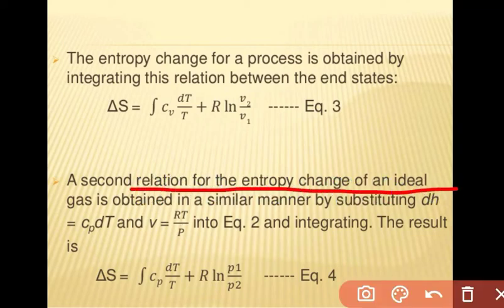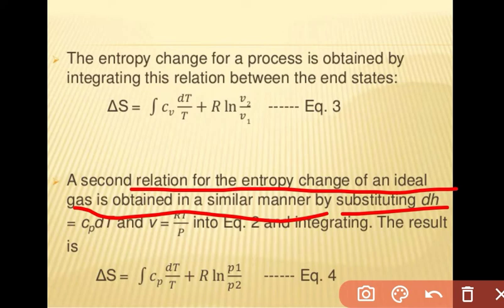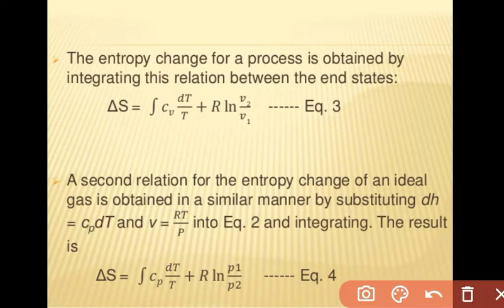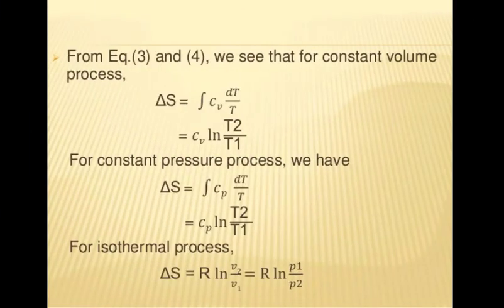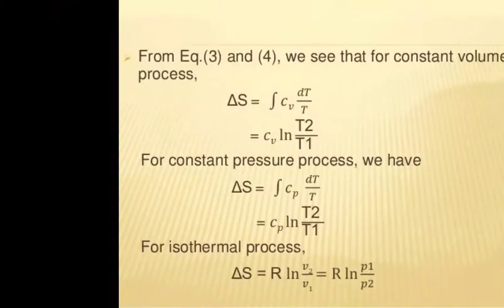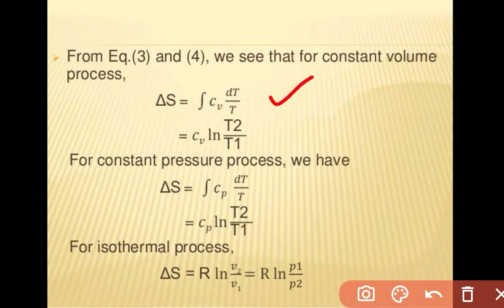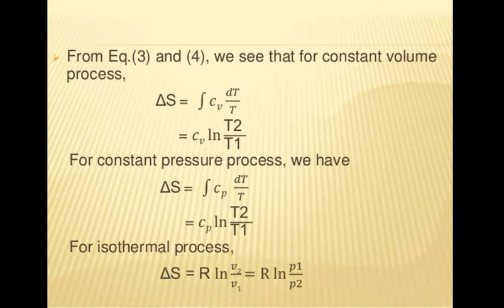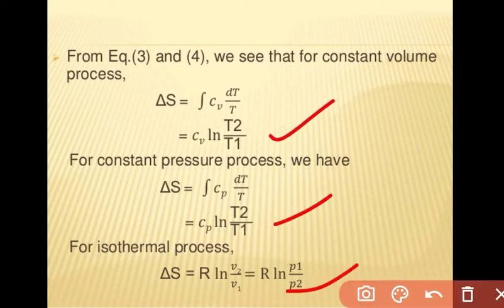A second relation for entropy change of an ideal gas is obtained by substituting dH = Cp dT and integrating, giving ΔS = Cp ln(T2/T1) − R ln(P2/P1). From these equations, for a constant volume process: ΔS = Cv ln(T2/T1); for a constant pressure process: ΔS = Cp ln(T2/T1); and for an isothermal process the corresponding relation applies. These are the important relations for change in entropy in different processes.